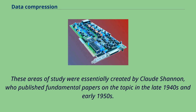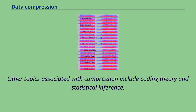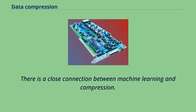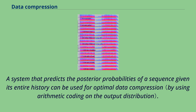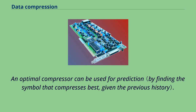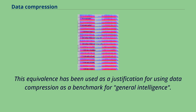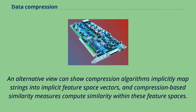These areas of study were essentially created by Claude Shannon, who published fundamental papers on the topic in the late 1940s and early 1950s. Other topics associated with compression include coding theory and statistical inference. There is a close connection between machine learning and compression. A system that predicts the posterior probabilities of a sequence given its entire history can be used for optimal data compression. An optimal compressor can be used for prediction. This equivalence has been used as a justification for using data compression as a benchmark for general intelligence.